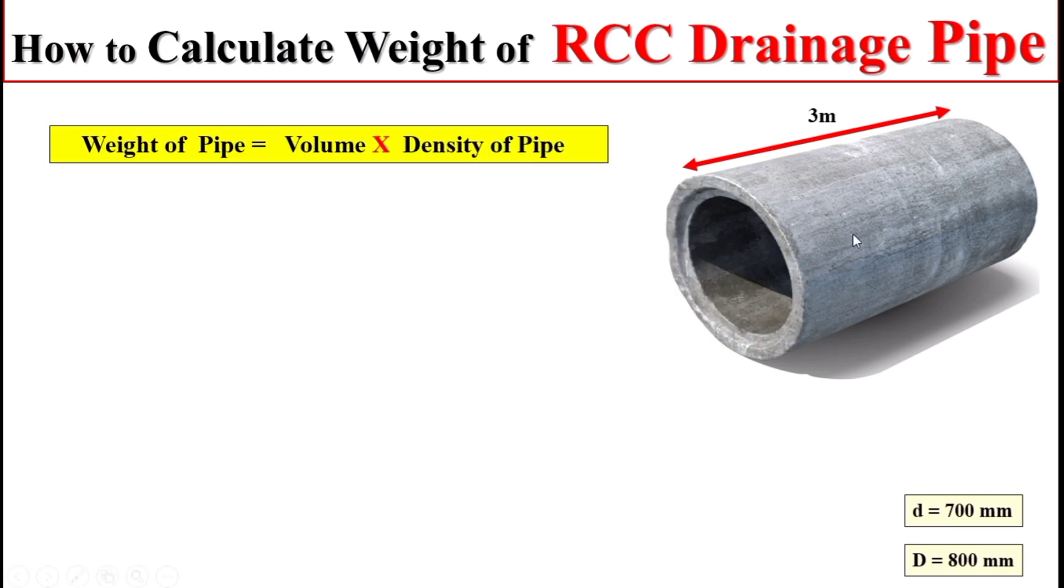Now dear students, to calculate total weight of this pipe, if we multiply total volume of the pipe with the density of pipe, we can get the total weight of this pipe. To calculate total volume of this pipe, if we multiply total area of this pipe with the length of the pipe, we can get the total volume of the pipe.